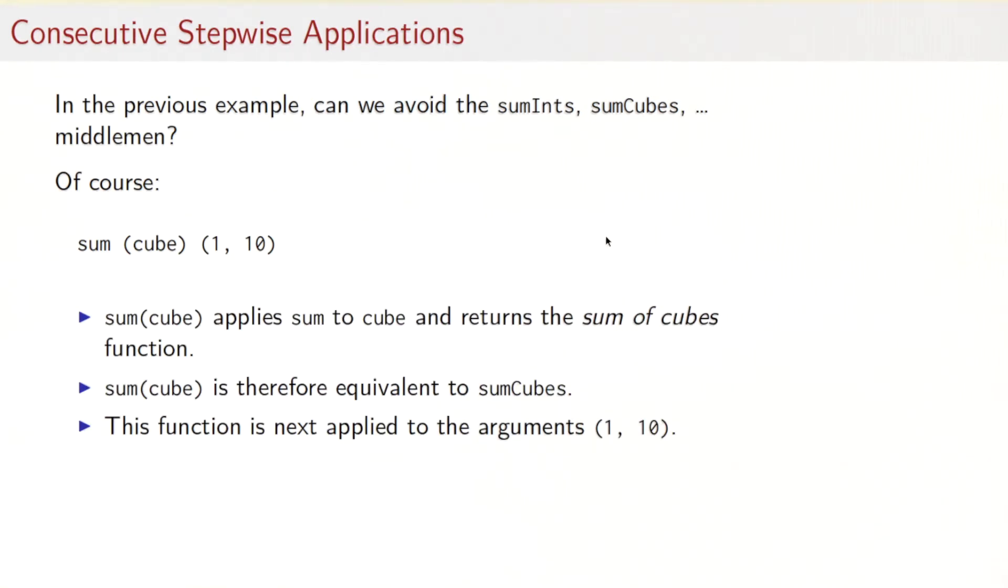Let's analyze that a little bit more. So sum of cube applies the sum function to the cube function and returns the sum of cubes function. Sum of cube is therefore equivalent to sum cubes. And that function is next applied to the arguments one and ten. So what that shows is that function application associates to the left. If you write sum of cube one ten, then that's really the same thing as sum of cube. This expression returns a function and that function then is applied to one and ten.